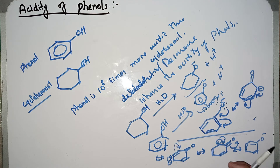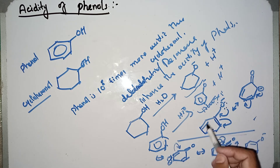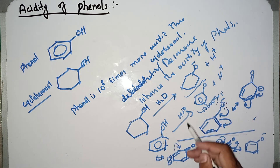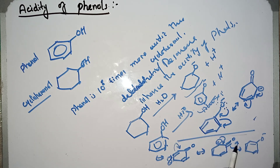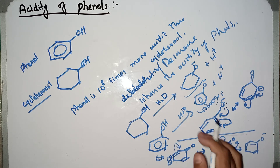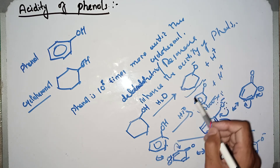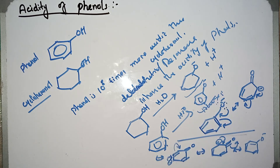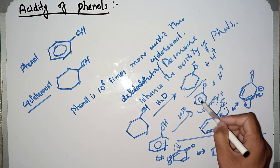Because the electron density is spread over a larger area, the phenoxide ion becomes stable. In contrast, in the case of the alkoxide ion from cyclohexanol, the negative charge remains focused only on the oxygen atom and does not delocalize. That's why the alkoxide ion has higher reactivity.